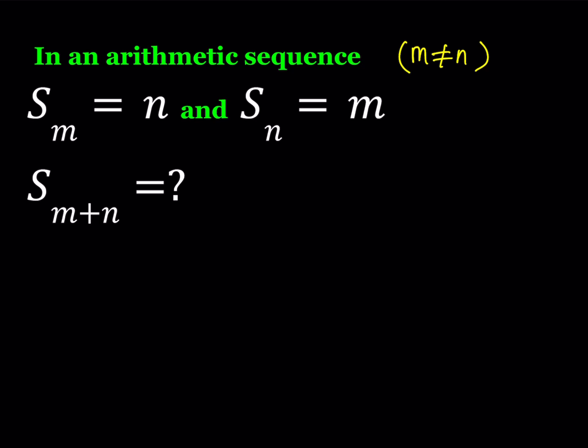First of all, let's talk about what S sub M or S sub N means. S sub N in any sequence pretty much means the sum of the first N terms. That's how we define S sub N. To solve this problem we're going to be using the formula for the sum of the first N terms of an arithmetic sequence.